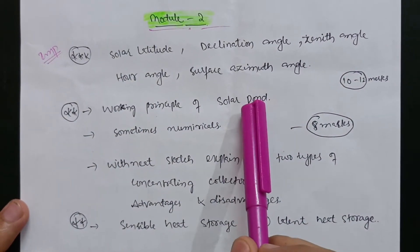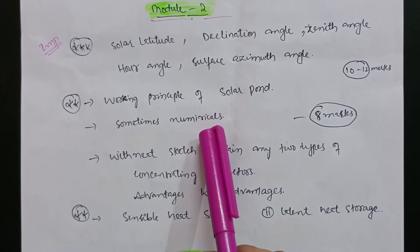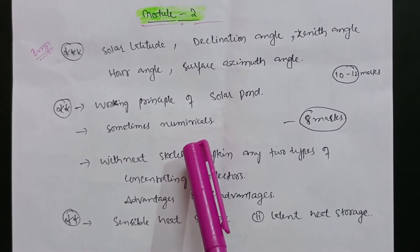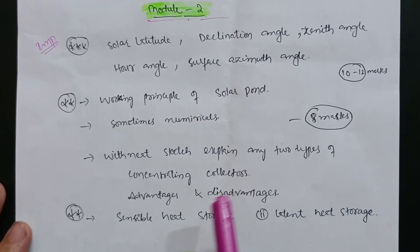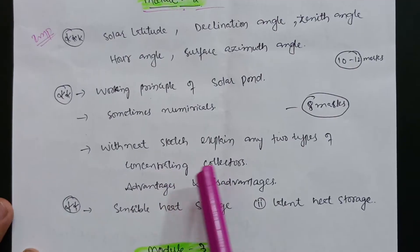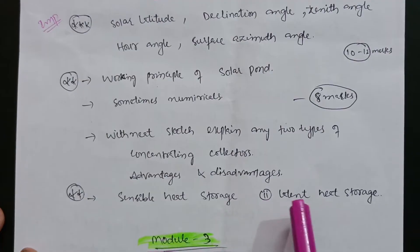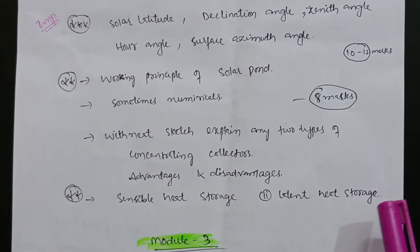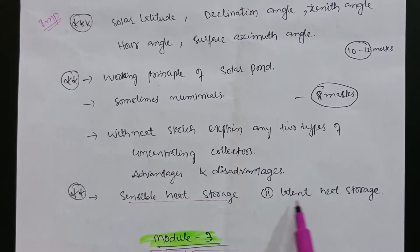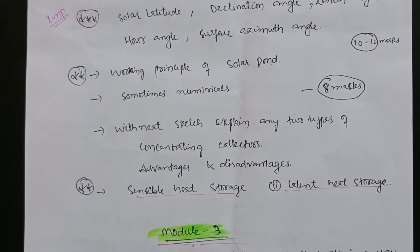The working principle of solar pond is also an important question in this module. Sometimes numericals will be asked in the examination, but you can skip the numerical part if it is not convenient and just go through the theory content. Also, with neat sketch explain any two types of concentrating collectors and their advantages and disadvantages. Sensible heat storage and latent heat storage are also important — these energy storage topics are asked most times in the examination.